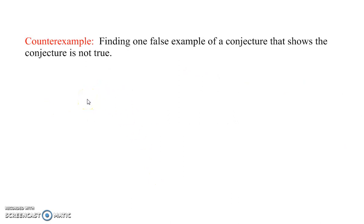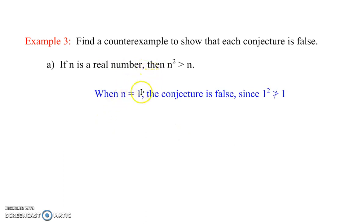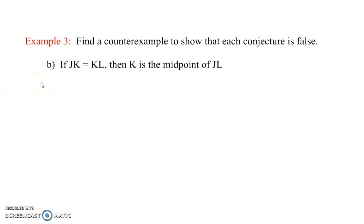A counterexample is finding one example of a conjecture that shows the conjecture is not true. In order for a conjecture to be proven true, it always has to be true. For it to be false, you only have to find one example of it being false. For example, if n is a real number, then n squared is greater than n. Let's take n equals 1. In this case the conjecture is false, since 1 squared equals 1, which is not greater than 1. So that's a counterexample.